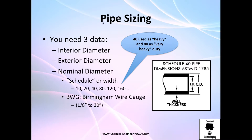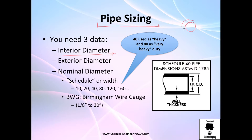Let's talk about pipe sizing. You need three data points, but depending on the application or calculation, you need one of these. Either you need the interior diameter, which is what you actually care about when doing analysis on the fluid inside the pipe — you don't care about the width or size of the pipe wall, just the internal diameter.